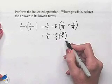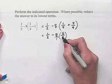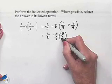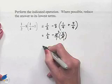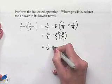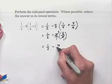Notice that 4 is a common factor. We can divide 4 by 4 to give us 1, 8 by 4 to give us 2, and we come up with 1/2 minus, our numerator becomes 10, our denominator is a 1.